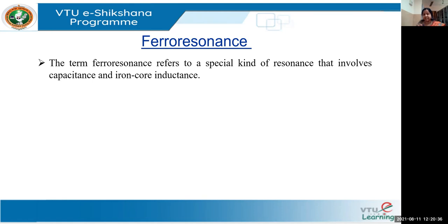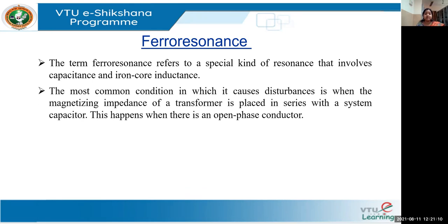Ferroresonance is a special kind of resonance that involves the inductance of the transformer when it comes in series with capacitance. It happens basically in a non-linear kind of inductance. The circuit contains a non-linear type of inductance in series with the effect of capacitance. When I talk about a non-linear inductance, I'm talking about a transformer or reactors. The most common condition causing disturbances is when the magnetizing impedance of the transformer comes in series with the capacitance effect.